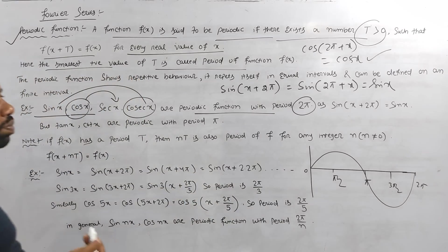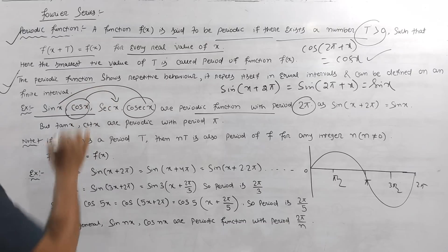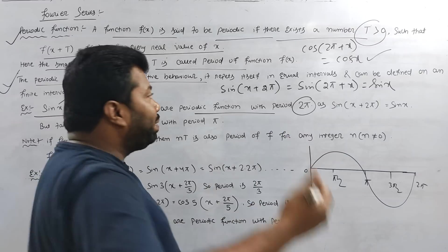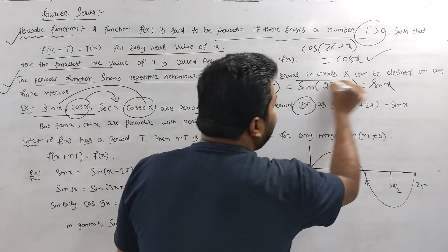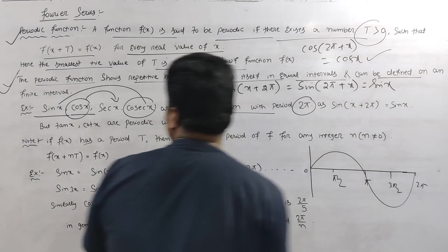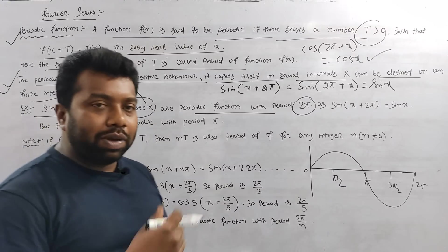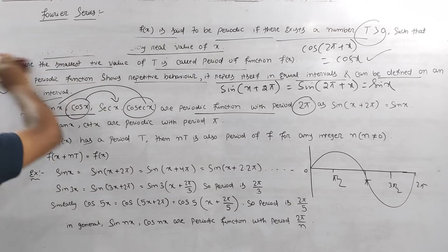The periodic function shows repetitive behavior. There is a repeated pattern — it repeats itself in equal intervals and can be defined on a finite interval. In a particular interval, the function repeats. That is what we call a periodic function.